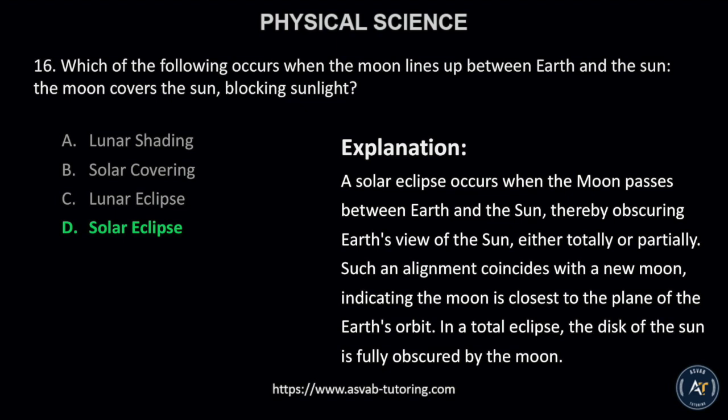This is because a solar eclipse occurs when the moon passes between Earth and the sun, thereby obscuring Earth's view of the sun either totally or partially. Such an alignment coincides with a new moon, indicating the moon is closest to the plane of the Earth's orbit. In a total eclipse, the disk of the sun is fully obscured by the moon.